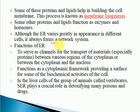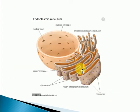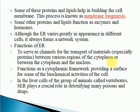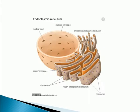The endoplasmic reticulum forms a network system in a cell. Its functions include serving as channels for transport of materials. It forms channels for the transport of materials between various regions of the cytoplasm or between the cytoplasm and the nucleus. Substances formed inside the nucleus can be transported to the cytoplasm through this channel, or the transport of materials can take place within the cytoplasm through the endoplasmic reticulum.